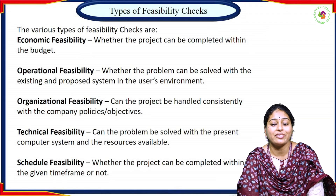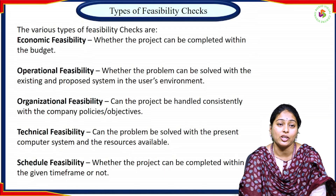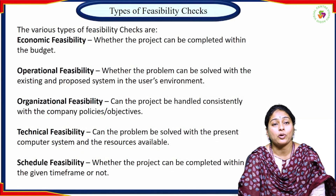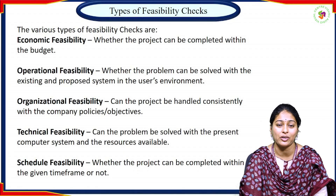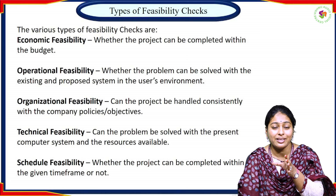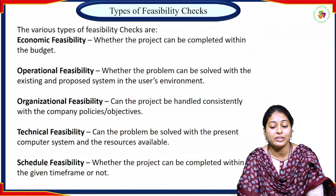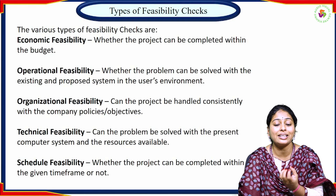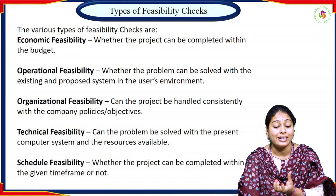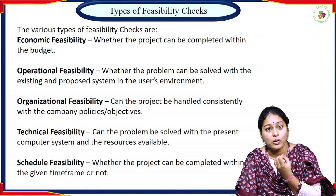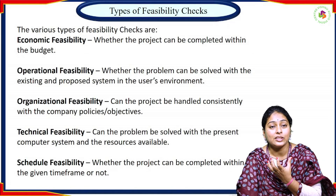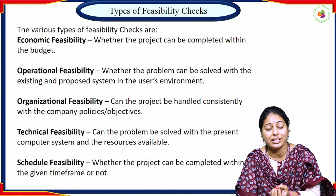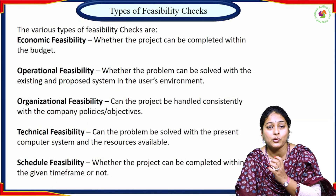Economic feasibility: whether the project can be completed within the budget. Operational feasibility: whether the problem can be solved within existing and proposed system resources in the user environment. Organizational feasibility: can the project be handled consistently with the company policies and objectives. Technical feasibility: can the problem be solved with the present computer system or available resources. Schedule feasibility: can the project be completed within the scheduled time.